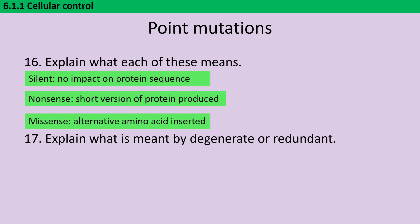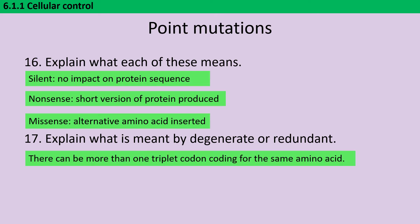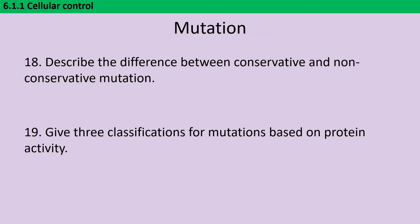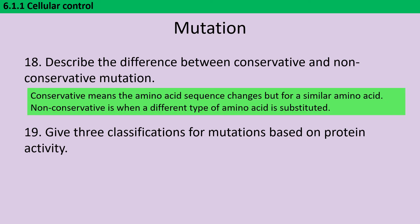A codon being degenerate or redundant refers to the idea that there's more than one triplet codon that codes for the same amino acid. If a missense mutation is conservative, that means the original amino acid has been replaced by an amino acid of the same type — so a polar one replaced by a polar one, or a positively charged one replaced by a positively charged one. Non-conservative is where we've got a different class of amino acids, so maybe a non-polar amino acid being replaced by a negatively charged one.